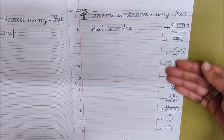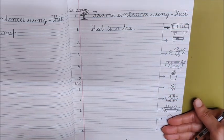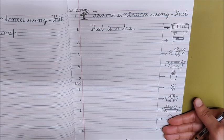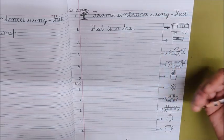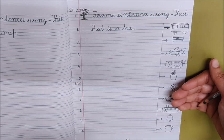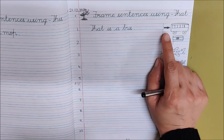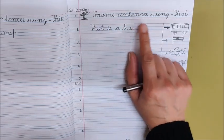And what do all these arrows tell us? What do they tell us? That the objects are far from us. And when objects are far from us, what do we use? That. So now we are going to make sentences using that.